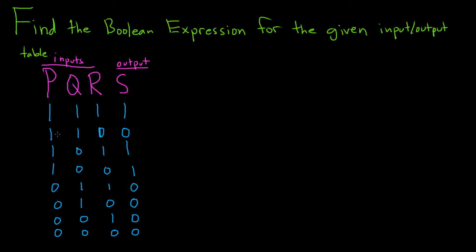Find the Boolean expression for the circuit for the given input-output table. So we have three inputs, p, q, and r, and a single output. And the goal is to find a Boolean expression.